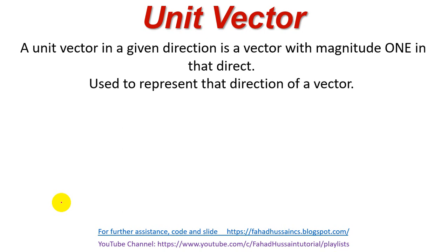The definition says that a unit vector in a given direction is a vector with magnitude 1. It is used to represent the direction of the vector, and its magnitude is always 1.